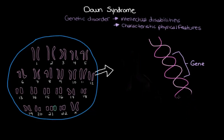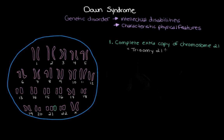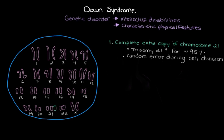There are actually a few different ways this extra 21st chromosome material can arise. The most common cause is a complete extra copy of chromosome 21, which we call trisomy 21 — 'tri' meaning three. This is the case for about 95 percent of people with down syndrome. The reason there's an extra 21st chromosome is because of a random error that occurs during cell division, which produces an egg or sperm — usually an egg — with an extra 21st chromosome. This is a totally random event, not something passed down from mom or dad.